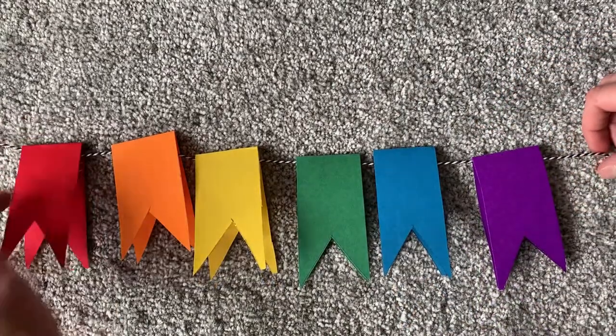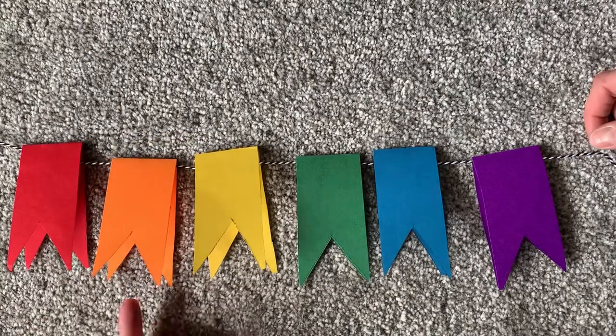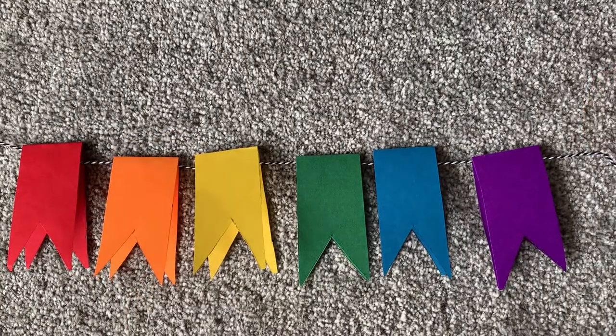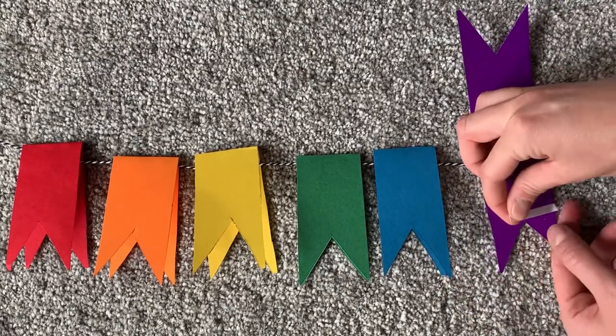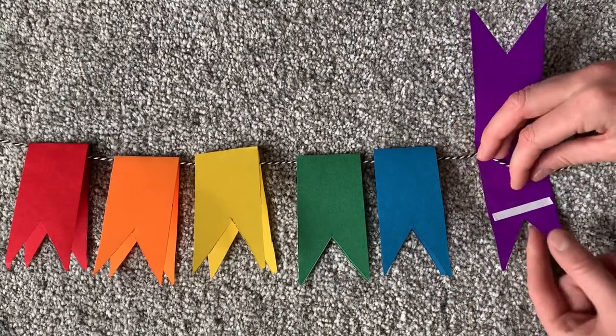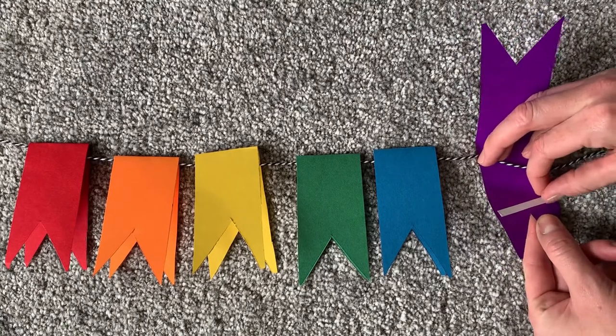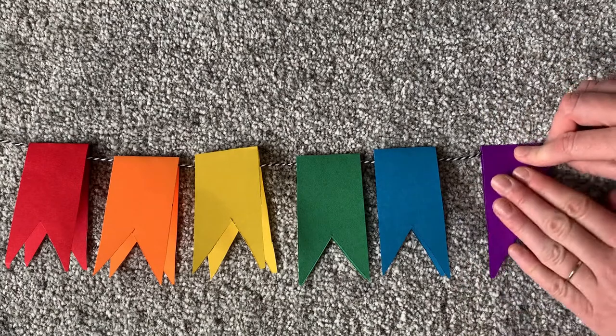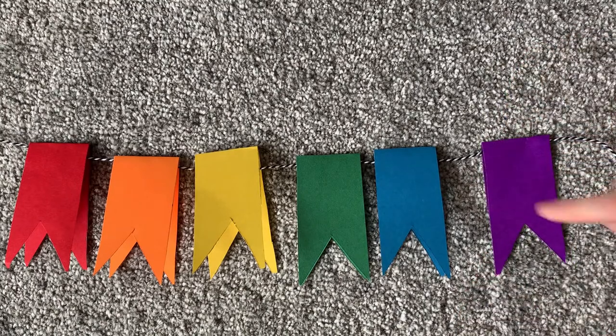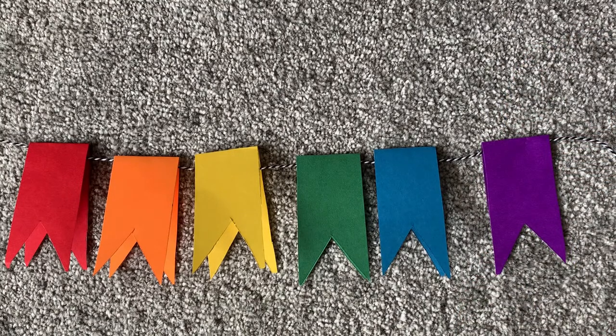And what we're going to do is stick these together now with some double-sided tape inside. So with your strip of double-sided tape just pop it on the inside of the flag. Peel the backing off and then stick it together. And that's your first one done. And do that with the rest.